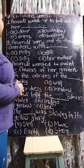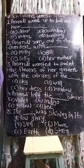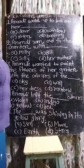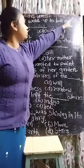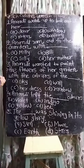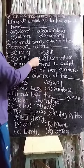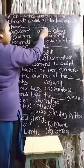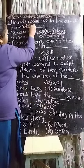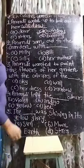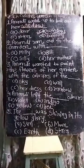Now we will tick the correct option. First one: Anandi woke up to look out of her — ki Anandi kya karne ke liye utha? The answer is window. So write down here: window. Anandi woke up to look out of her window.